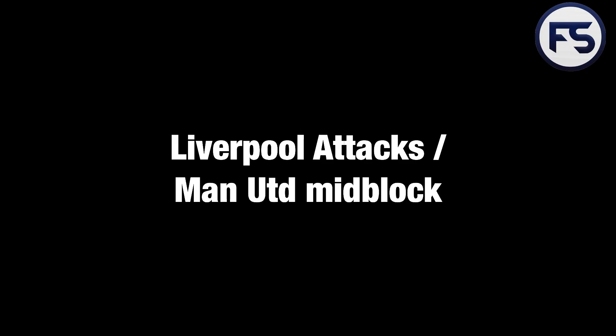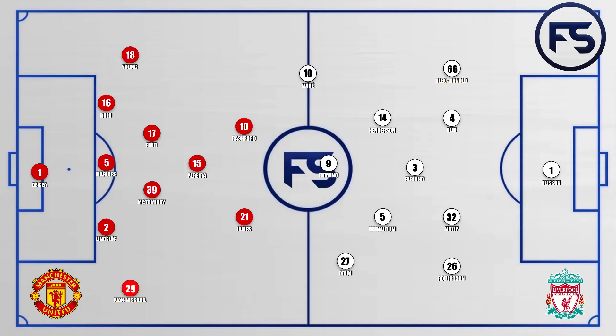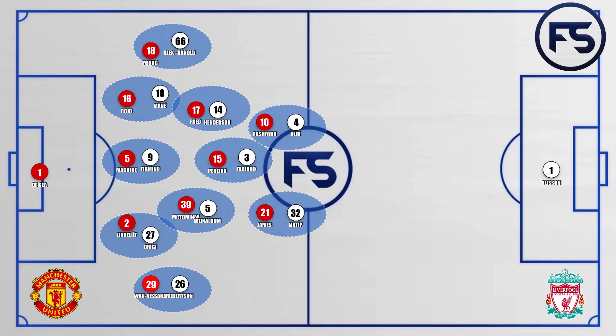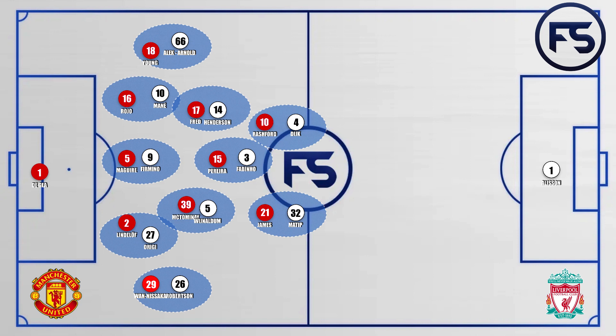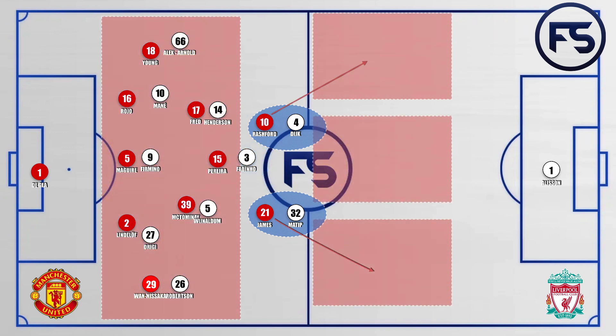Looking at Liverpool's attacks against Manchester United's mid-block defence — when we interlock the systems, we can see that Manchester United deliberately played a 5-2-1-2 to mark man-to-man each player from Liverpool. They did this because Liverpool's high fullbacks would leave space behind them and into the channels either side of the centre-backs. So they played with the two quickest players, Rashford and James, trying to exploit that space and force the fullbacks to stay back.